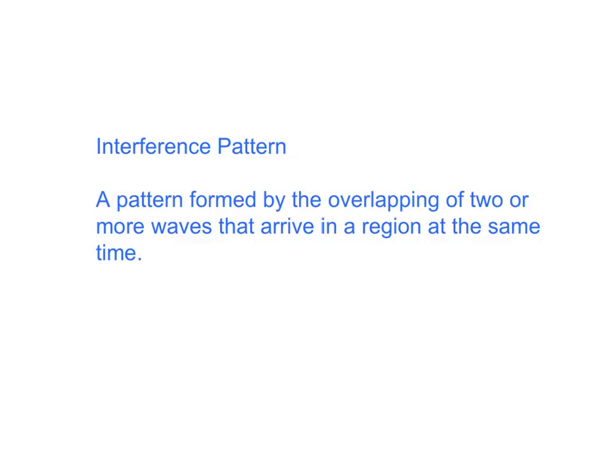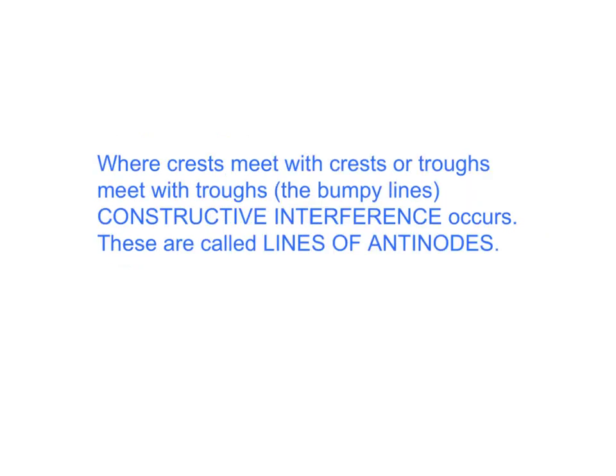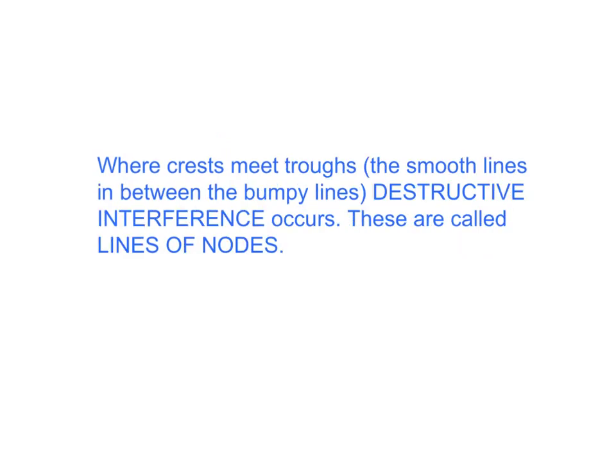Let's summarize. An interference pattern is a pattern formed by the overlapping of two or more waves that arrive in a region at the same time. Where crests meet crests or troughs meet troughs — the bumpy lines — constructive interference occurs. These are called lines of antinodes. Where crests meet troughs — the smooth lines in between — destructive interference occurs. These are called lines of nodes.